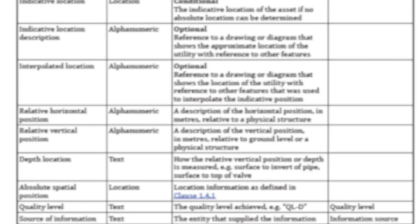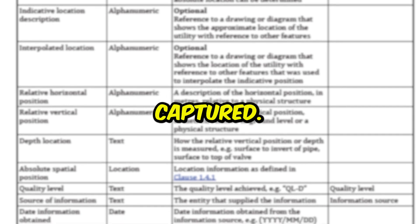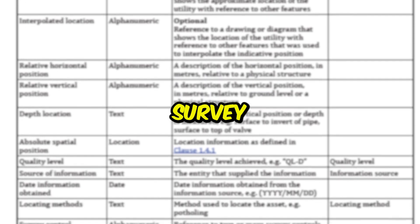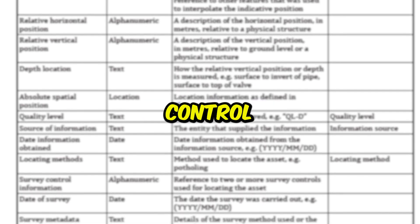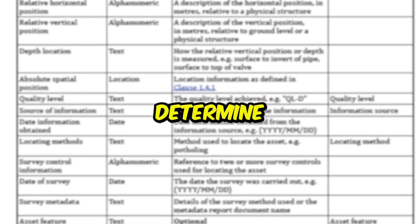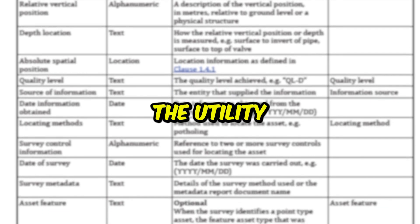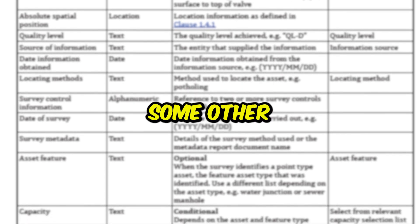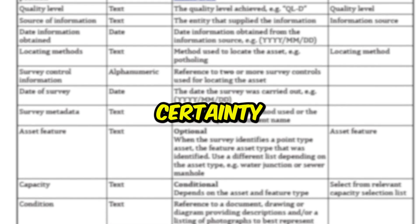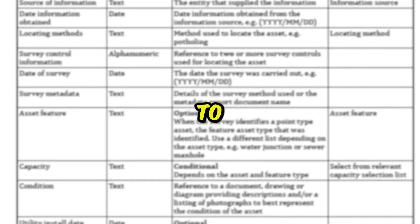Quality level A points should also include important digital information stored as metadata, such as the quality level A acronym conveyed as QLA, the date the data was captured, the source of the information, the survey locating methods used to obtain the attribute information, survey control information used to determine the absolute position of the utility, who were the locators and who surveyed the utility data, and some other technical information used to convey the certainty of the information to our clients.